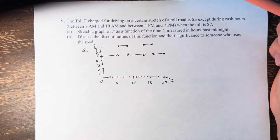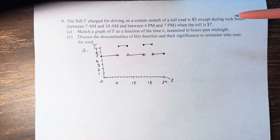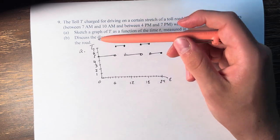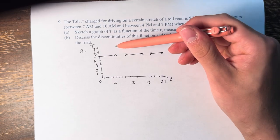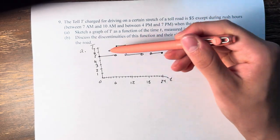I specified the difference between open and closed circles on this graph because it says between 7 a.m. and 10 a.m. So I'm assuming that at 7 a.m. and at 10 a.m. it's going to cost $7, so it's closed circles for those values.